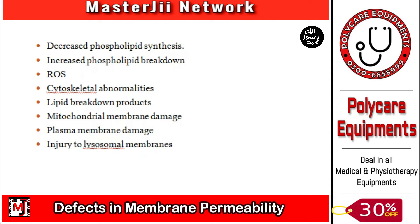If there is lysosomal membrane damage, lysosomal enzymes will leak out into the cytoplasm and be released. These enzymes have acidic pH activity and can damage proteins, glucose, and glycols. When the enzymes leak out, they digest the cell contents, causing cell death by necrosis.